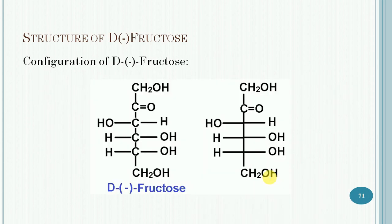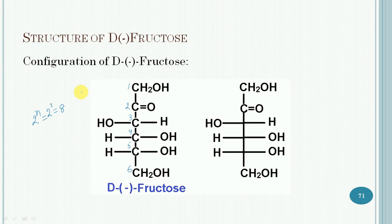Next is the configuration of D-fructose. The open chain structure contains 3 stereocenters at carbon numbers 3, 4, and 5. Therefore, the total number of possible stereoisomers is 2 raised to the power n, where n is the number of stereocenters — that is 2 to the power 3, which equals 8. These are the total possible stereoisomers in the case of fructose.